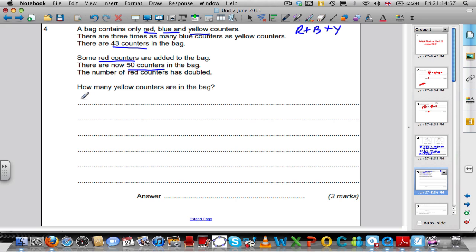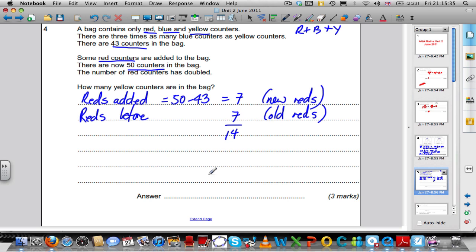To get one easy mark, you could say that the number of reds added must be equal to 50 subtract 43, which is 7 new reds. It says the number of reds has doubled. So if there are 7 new ones in there, there must have been 7 ones in there before for it to have doubled. So the number of reds before must equal 7 old reds.